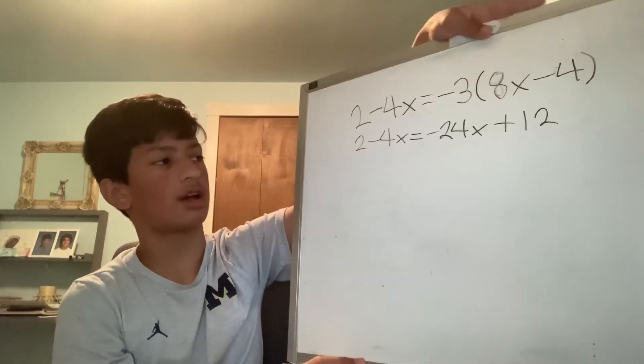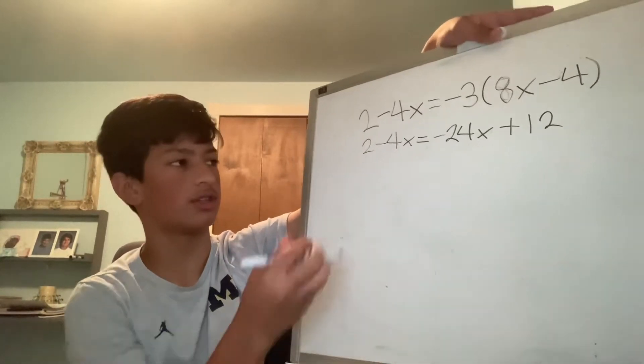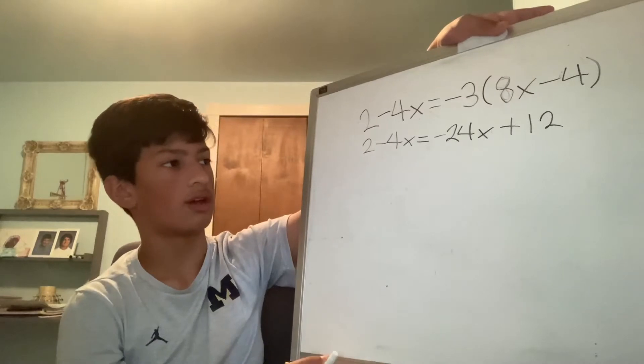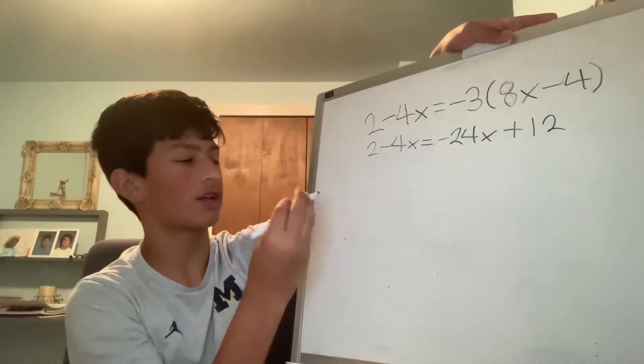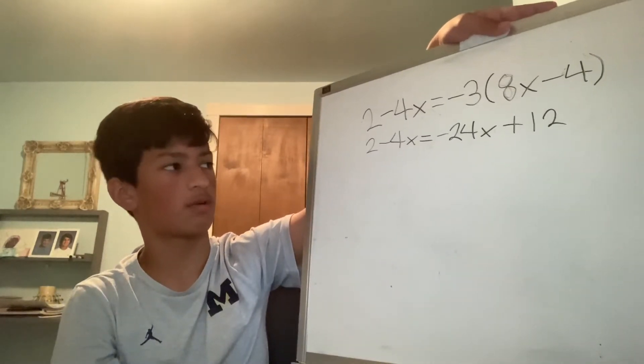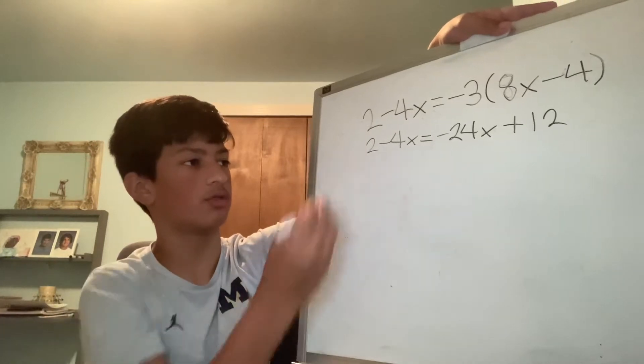After this, I have to isolate the variable, which in this case is x. To begin, I can use the subtraction property of equality to subtract 2 from both sides.